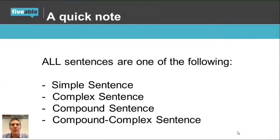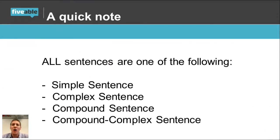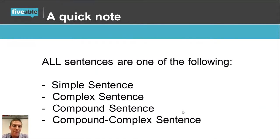Quick note: every single sentence is one of these four types — simple, complex, compound, or compound-complex. The next six sentence types all fall back into one of these categories, but there's going to be more than just the type of sentence. If this is kind of a new concept, maybe just start here: make sure you don't have three simple sentences in a row or three complex sentences in a row. Start to vary these up. But if you're ready to go to the next level, that's what the next six sentence types are for.